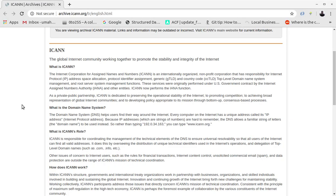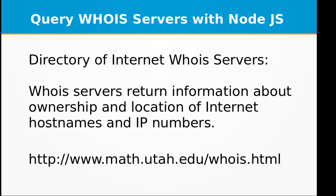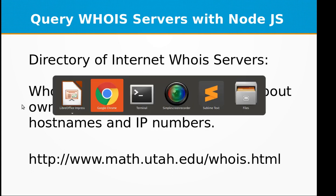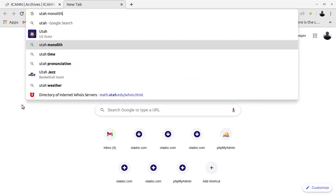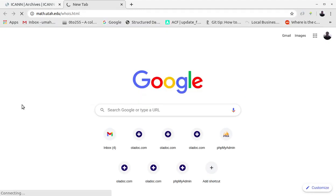There is a directory of internet WHOIS servers. WHOIS servers return information about ownership and location of internet hostnames and IP numbers. There is a list of WHOIS servers on the University of Utah website, in their math department.